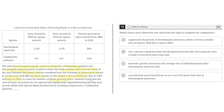Canone found that the area of land covered by the two species had significantly expanded during the nine-year period. While both species likely benefited from warming temperatures, Columbanthus quercensis saw a notably greater increase.